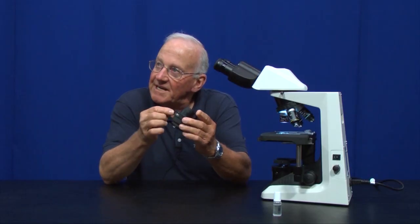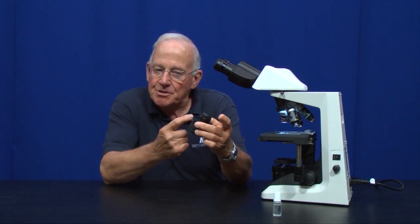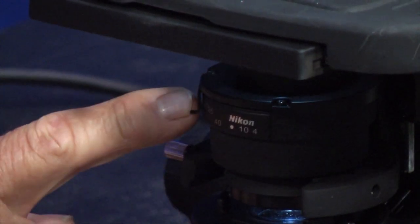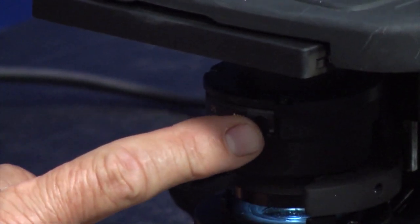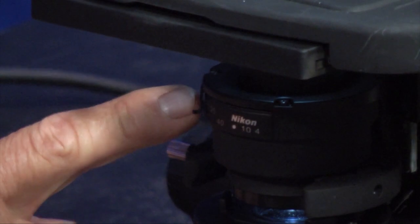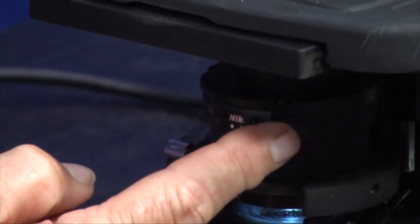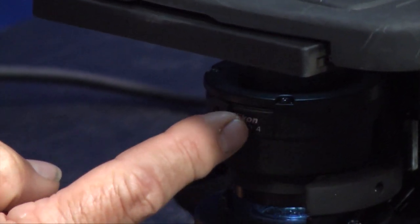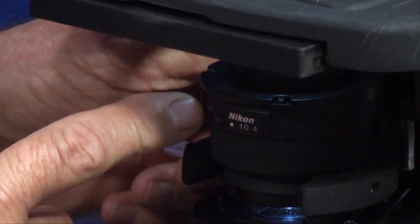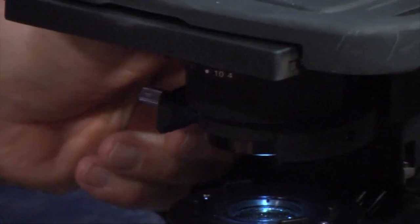It's important that when you first use the microscope, the aperture diaphragm be fully opened. When you turn this lever to the right, you can see it closing down. What you want to do when you start using the microscope is have it all the way to the left so that you're getting all of the light up to the specimen.